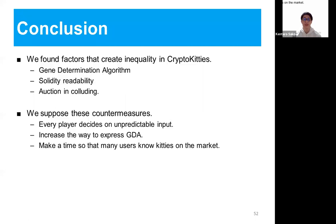In conclusion, we found factors that create inequality in CryptoKitties. GDA fails to provide all users equal opportunities for profit due to its lack of randomness and readability. In other words, there is potential for players to collude to unfairly keep kitties from others. We suggested that the output of GDA should be unpredictable and that GDA should be understandable to many people. We also came up with an idea that would make collusion in the auction pointless. Thank you for listening.